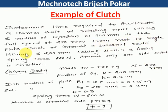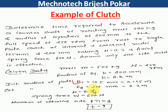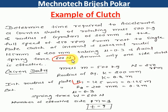This is a single plate clutch with internal and external radii given. The internal radius is 125 mm (0.125 m) and external radius is 200 mm (0.2 m). The coefficient of friction μ = 0.3, axial spring force W = 600 N, and assume only one side of the clutch is effective, so n = 1.